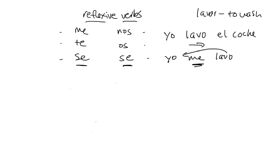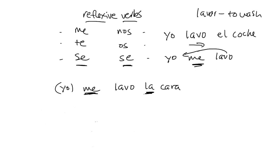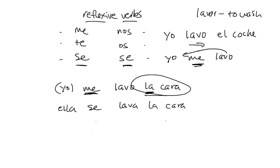Now these reflexive pronouns can also be used with direct objects. For example, if you want to say in Spanish 'I wash my face,' you have to say yo — optional — me lavo la cara. La cara is 'face.' In Spanish, speakers will very rarely use possessive adjectives with parts of the body — they won't say mi cara. They'll use a reflexive pronoun to show where the action is going and then use the simple definite article: 'I, to myself, wash the face.' Yo me lavo la cara. Or ella se lava la cara.